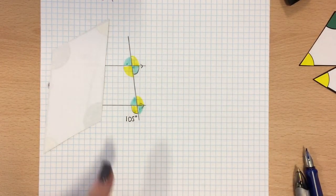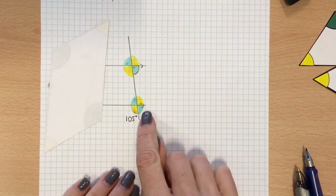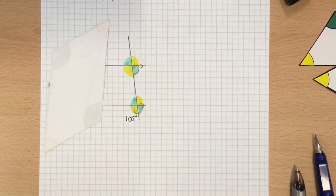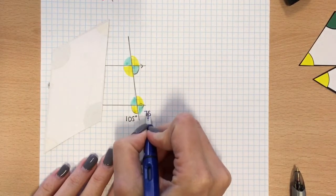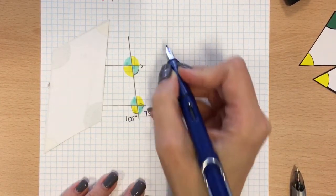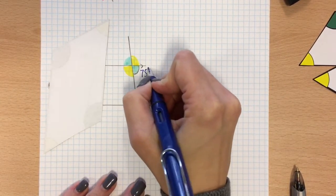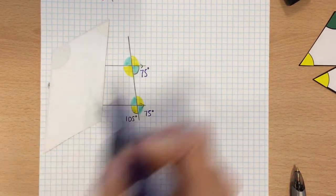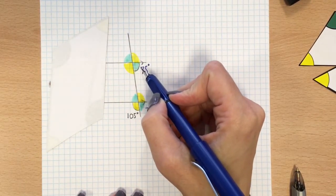So now I know that the yellow angle is 105, I can work out the green one. I do 180 take away 105, which is 75. So all the green angles are 75, so therefore we found our missing one, which is this one here.